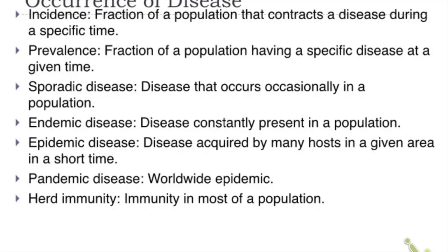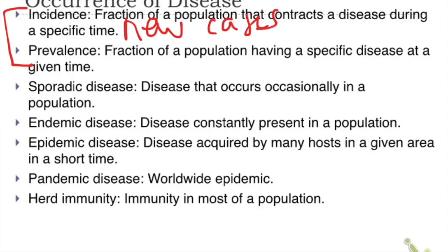Two important terms: incidence and prevalence. Incidence is the fraction of a population that contracts a disease during a specific time period — it refers to new cases. Prevalence is the fraction of a population having a specific disease at a given time — it includes both old and new cases.